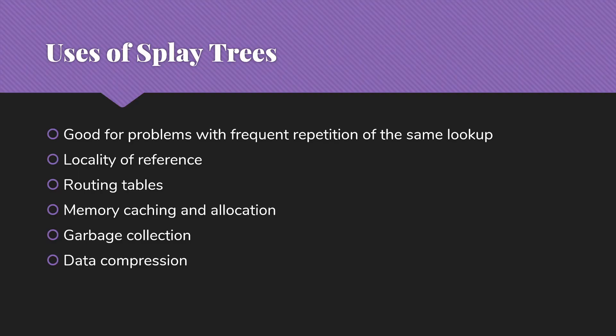Examples where splay trees are used in the real world: routing tables for networks where we have many packets that are likely to come from one source to another destination. Most messages are not just one packet long. So we'll be looking up the same destination repeatedly. Memory caching and allocation, similar kinds of concepts. Garbage collection, data compression of certain kinds can make good use of these. And there are other examples, but what's true of all of these is that once we've looked up something, we're very likely to look it up again, more than once.